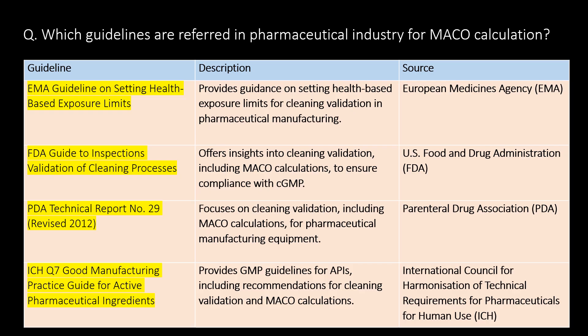Very important question: which guidelines are commonly referred to in the pharmaceutical industry for MACO calculation? First, EMA guidelines on setting health-based exposure limits. Second, FDA guidance on cleaning validation. Third, PDA technical report number 29. And fourth, ICH Q7.